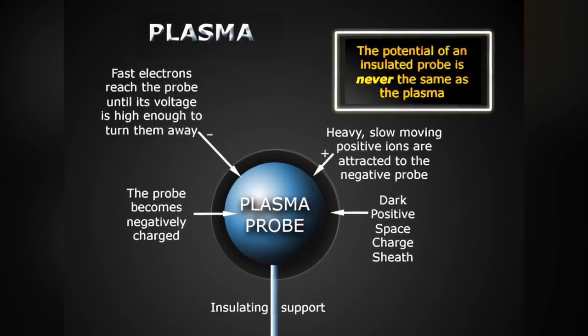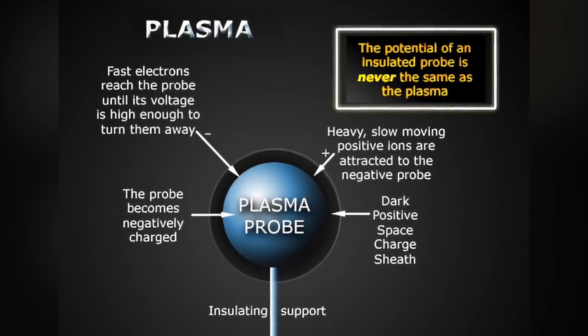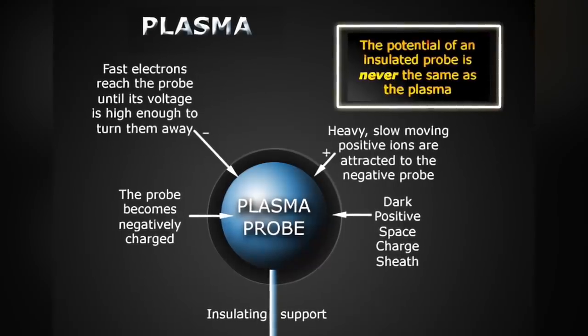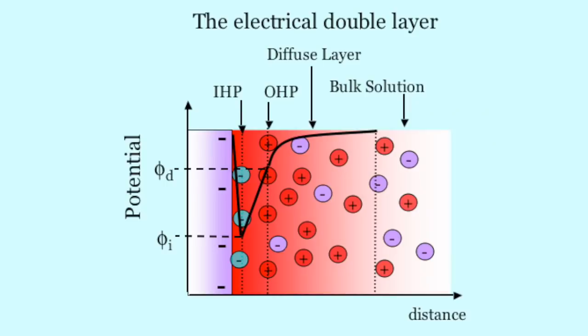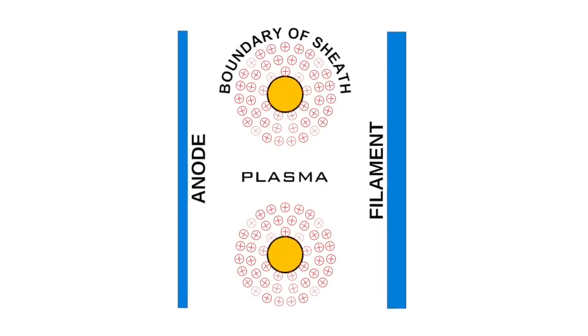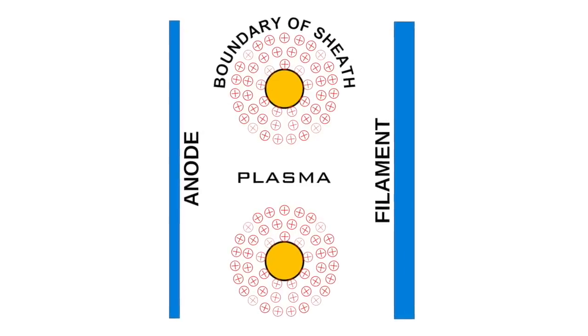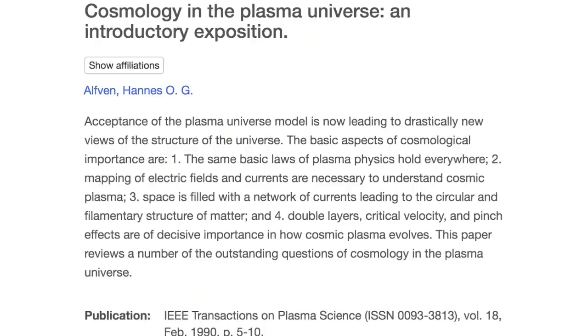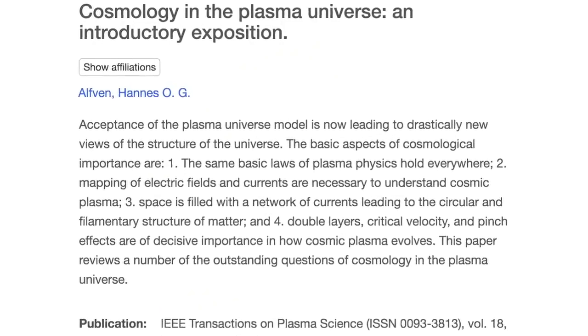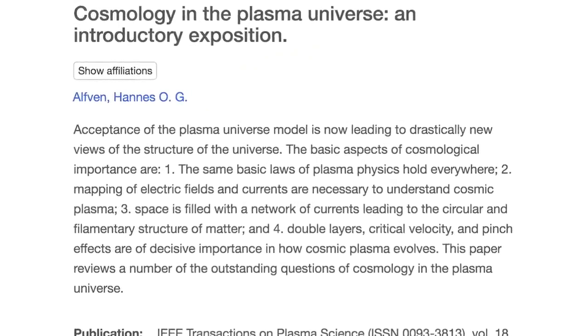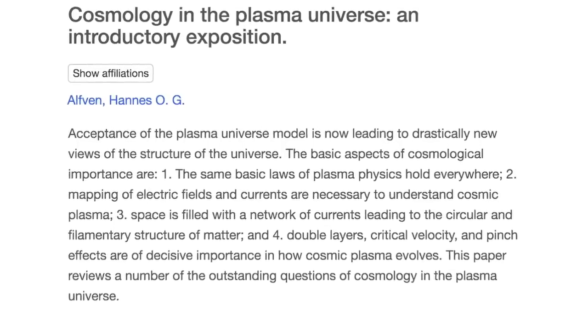Experimental plasma physics has shown that charged bodies embedded in plasma produce around themselves a double layer, or what is also known as a Langmuir plasma sheath. This protective cocoon of plasma contains most of the voltage difference between a charged body and its surrounding plasma. As Nobel Prize winner Hannes Alfvén wrote in his 1987 paper, Cosmology in the Plasma Universe.